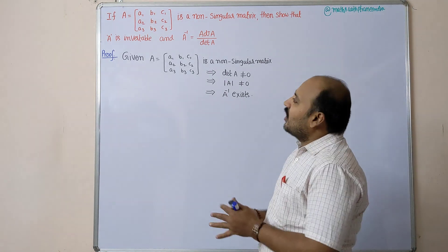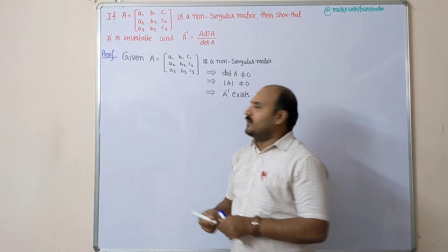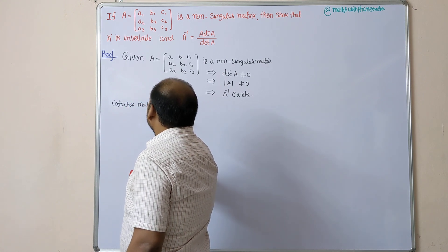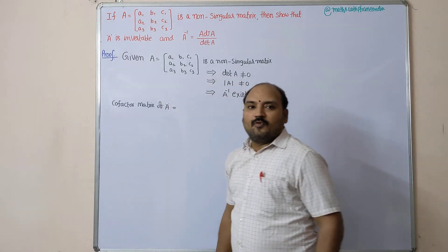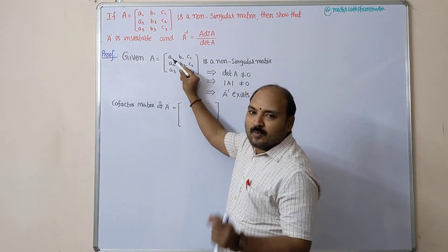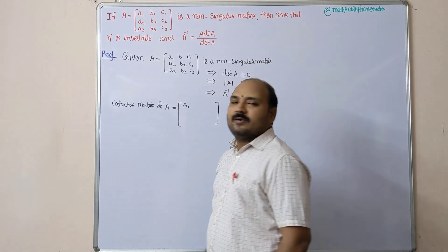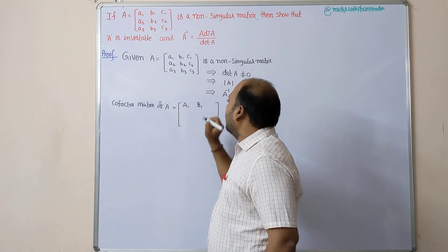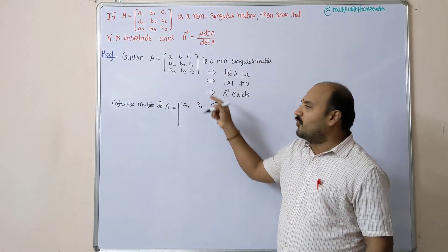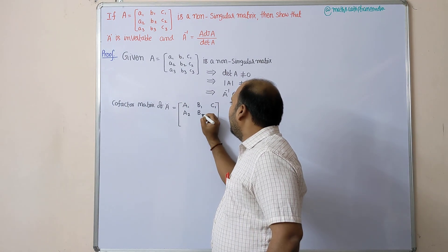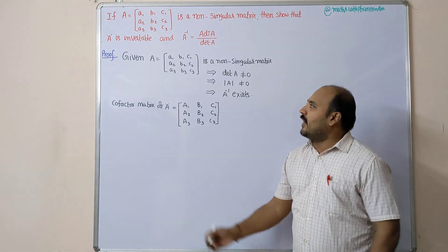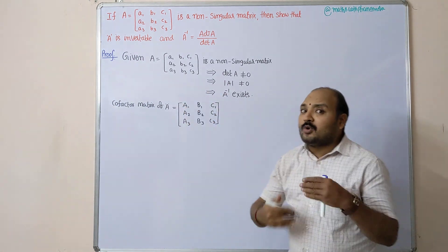After that, we have to write the cofactor matrix for the given matrix. For element a1, the cofactor is capital A1; for b1, cofactor is capital B1; for c1, capital C1. Similarly, for a2, capital A2; for b2, capital B2; for c2, capital C2; and for a3, A3; b3, B3; c3, C3. This is the cofactor matrix of the given matrix.